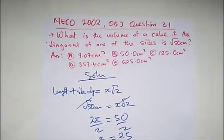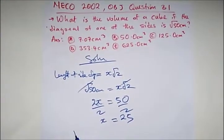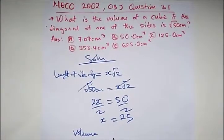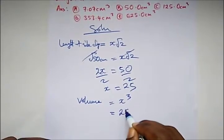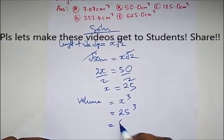Formula for volume is simply x³. Our x is 25. So here we have 25³, and 25³ is 15,625 cm³. This is our correct option here.